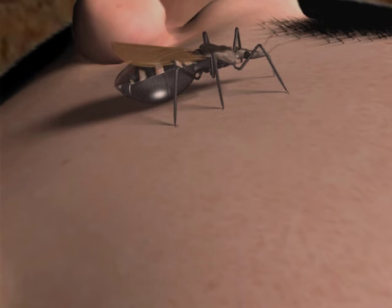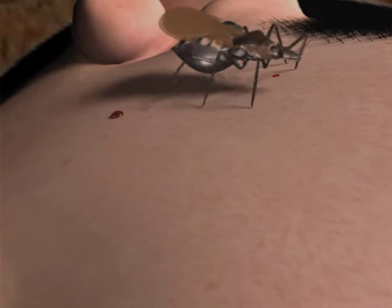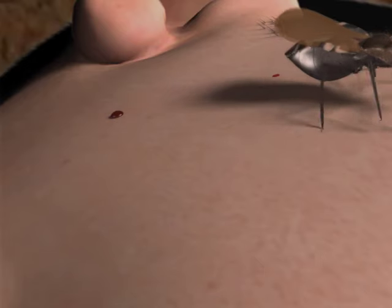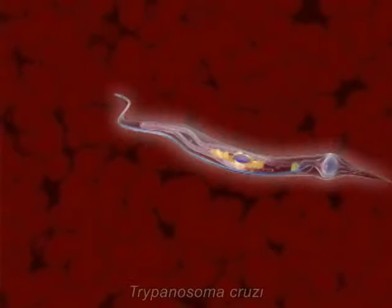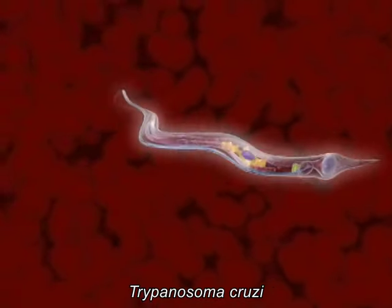Following the ingestion of blood, the metacyclic trypomastigotes are released with the feces from the insect near the area of the bite. Note that this form has great motility.